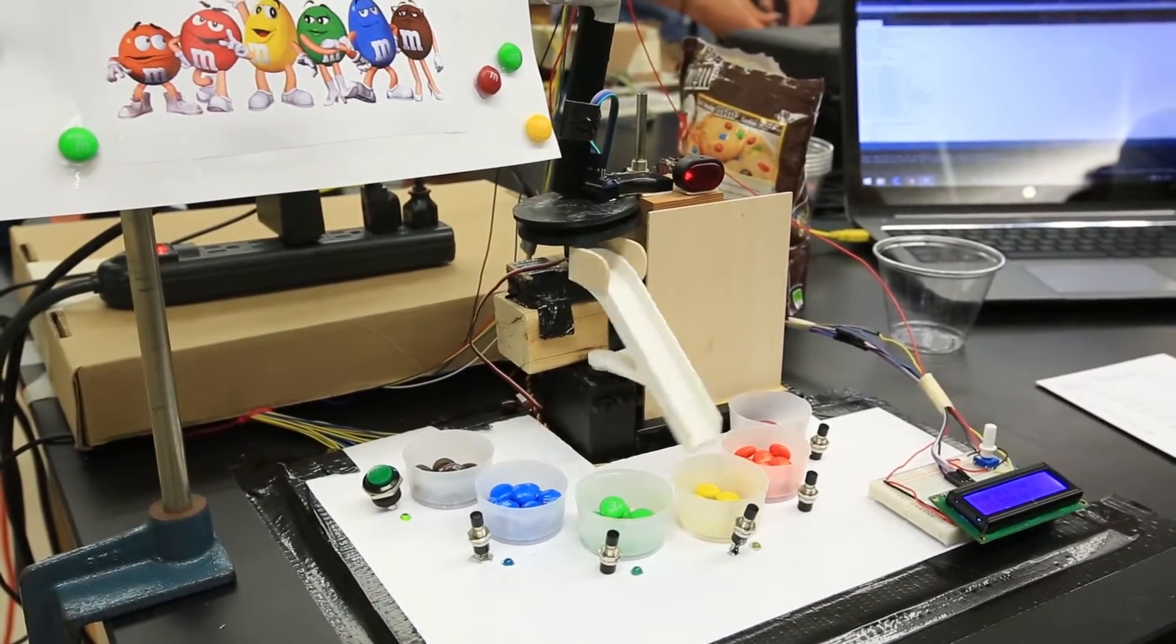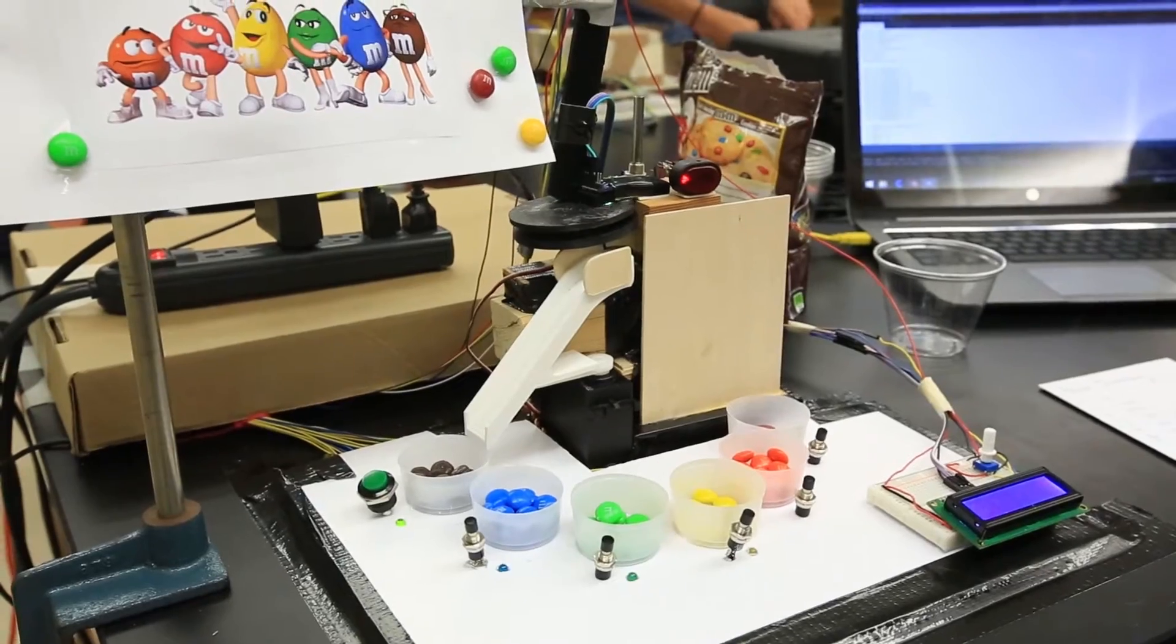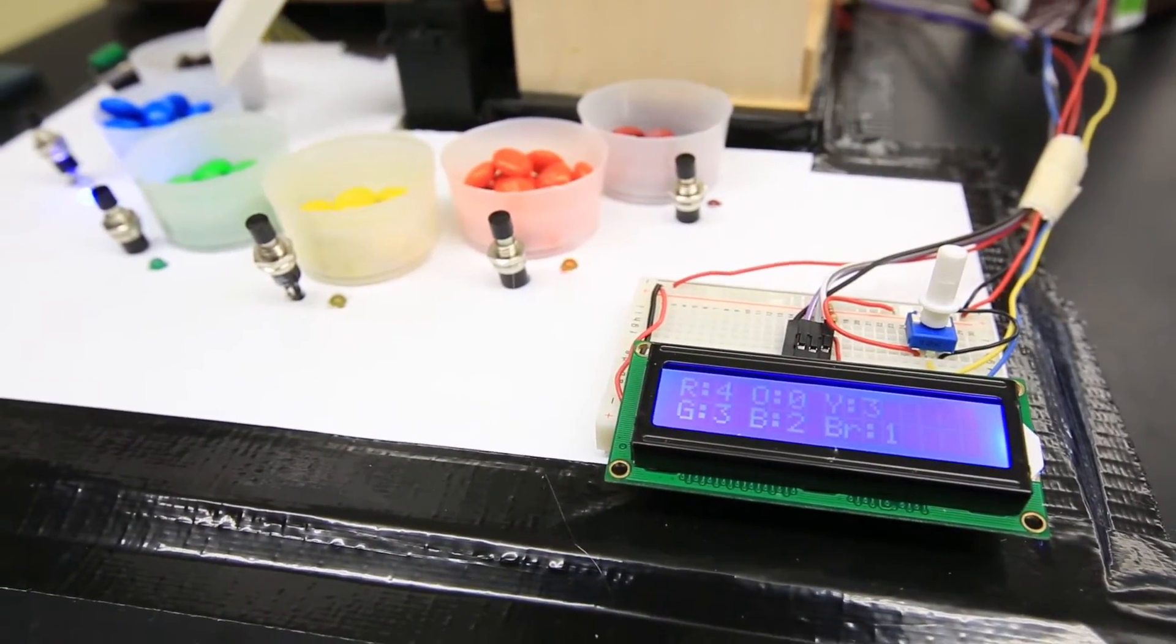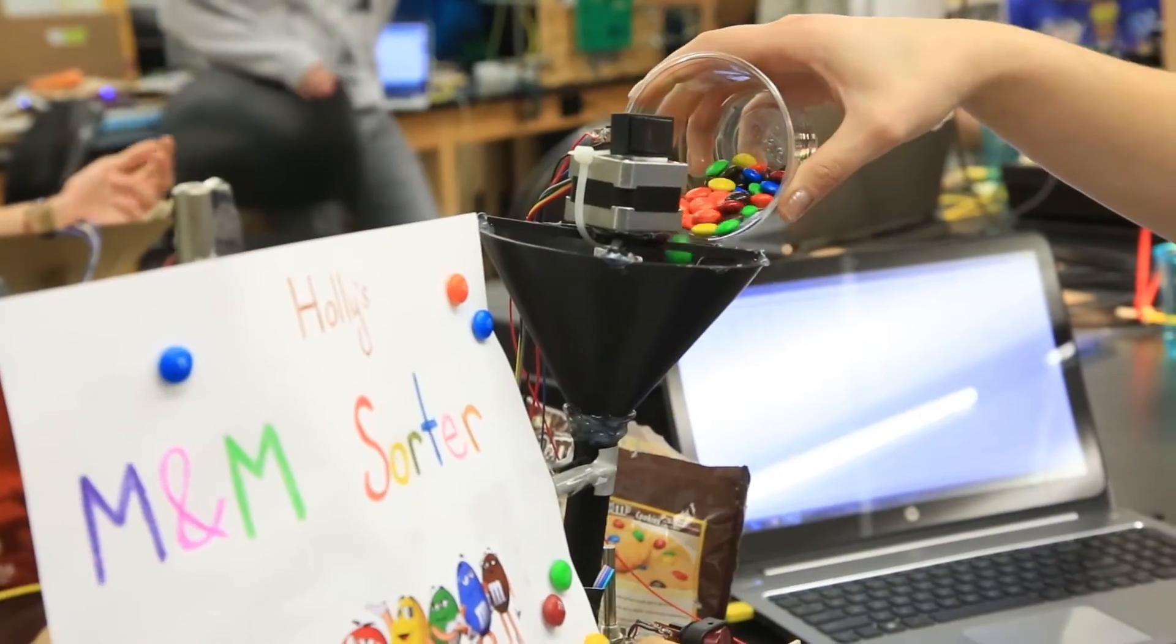My name is Holly DeSmit. I'm a senior physics major. For our digital electronics class, I made an M&M sorter powered by Arduino. There's a microcontroller that's programmed to sort M&Ms based on their color.